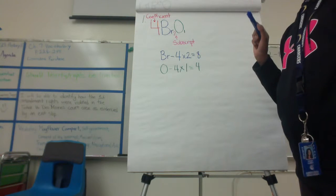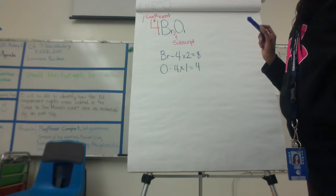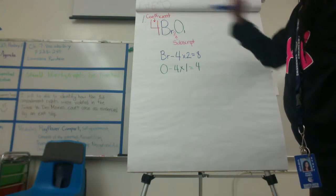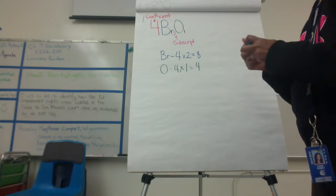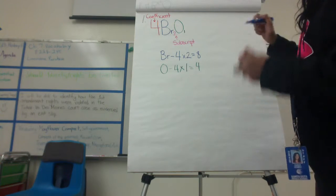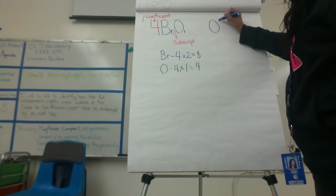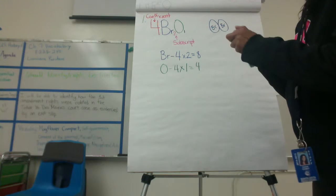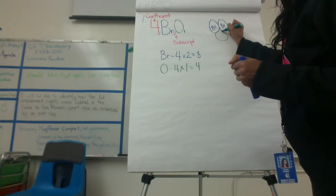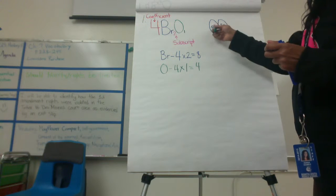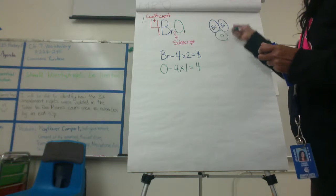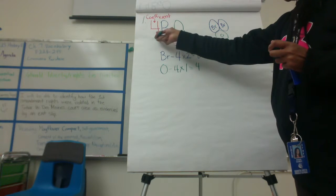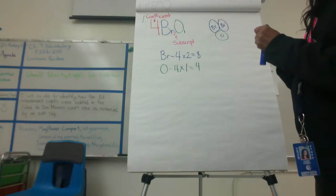The coefficient tells you how many compounds you're going to be drawing — in this case there are going to be four. The formula tells you how many bromines and how many oxygens are in each compound: there are two bromines for each oxygen. So I'm going to draw two bromines per oxygen. Since I need four compounds, I already have one, so I need to draw three more.